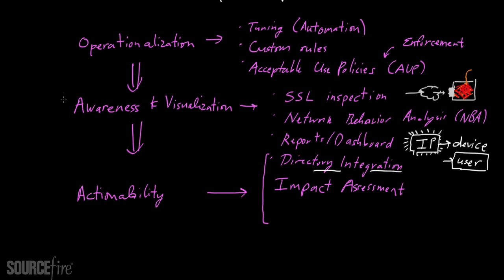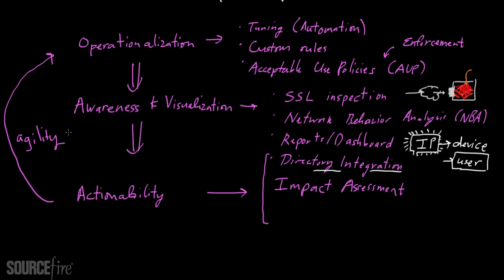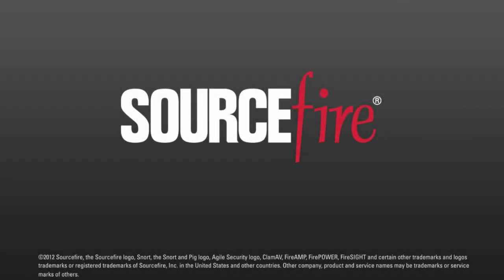All of this forms an interesting loop between operationalization, increased awareness, and being able to take action — which leads to improved agility. That's very important from a security perspective. It's not just about having technology that can detect a certain set of threats, but that technology has to evolve effectively, evolve rapidly, and use interesting data streams to make protection an ongoing thing, not just a one-time event.